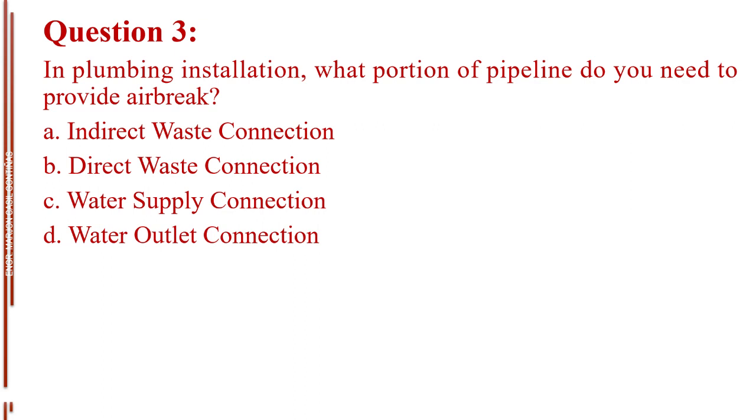Question number 3. In plumbing installation, what portion of pipeline do you need to provide airbrake? Letter A, Indirect Waste Connection. Letter B, Direct Waste Connection. Letter C, Water Supply Connection. Letter D, Water Outlet Connection. The answer is Letter A, Indirect Waste Connection.